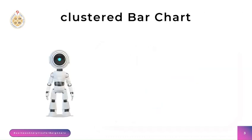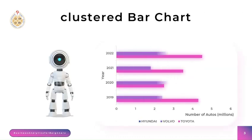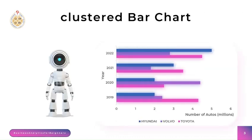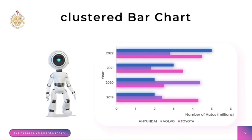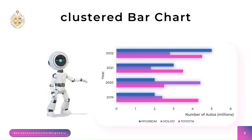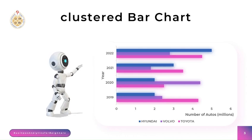Second, a clustered bar chart is a chart where horizontal bars represent different groups, and the length of each bar represents the value or magnitude of a specific variable. The bars are grouped side by side, with each group representing a distinct category.